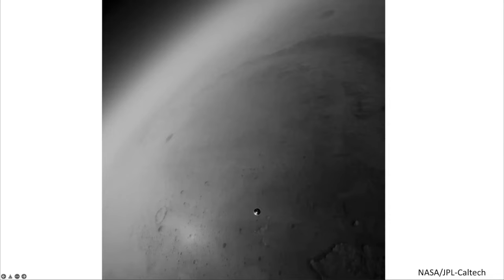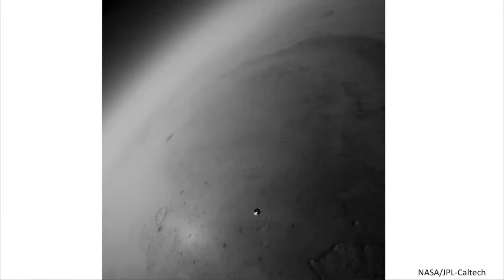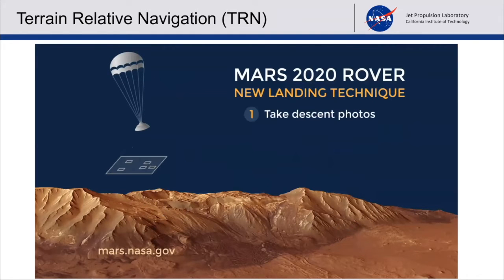You can see the crater rim — it's about the size of Lake Tahoe, so it's pretty big. There is a delta created by the river that was flowing into this crater about four billion years ago, and this delta was the goal for exploration.